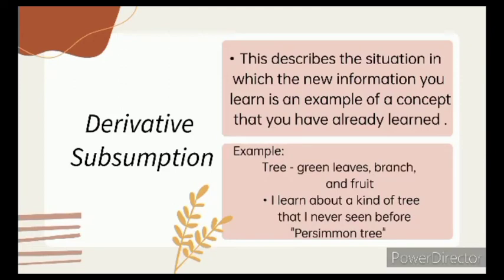Let's say for example, suppose I have acquired a basic concept such as tree. It has green leaves, branches, and fruits. I learned about a kind of tree that I have never seen before, persimmon tree. Conforming to my existing or previous understanding of tree, my new knowledge of persimmon trees is attached to the concept of tree without substantially altering that concept in any way. And that's the process of Derivative Subsumption.